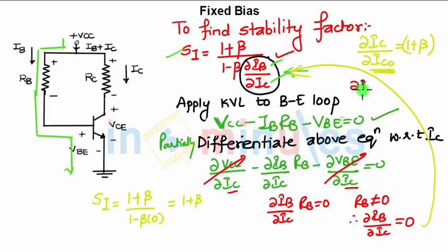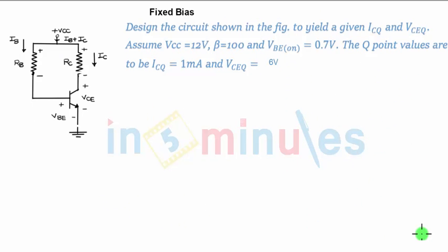How? The same equation I can write it as change in Ic equals to, just cross multiplying, 1 plus beta into change in Ico. For a small change in Ico, my Ic will change 1 plus beta times. That is the drawback of this circuit. So that can be explained with an example.